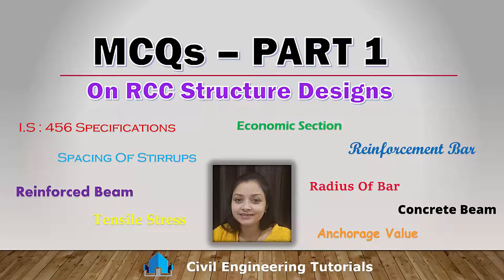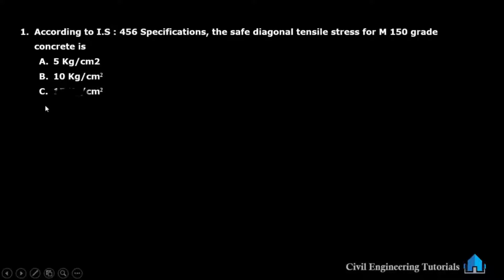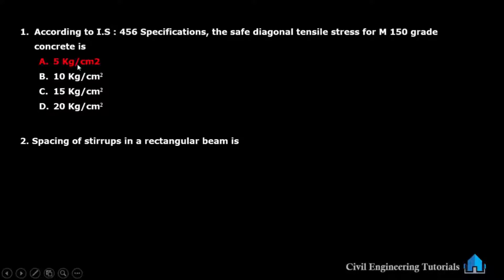Let's get started. Our first question: according to IS 456 specifications, the safe diagonal tensile stress for M150 grade concrete is — option A: 5 kg/cm², option B: 10 kg/cm², option C: 15 kg/cm², option D: 20 kg/cm². The answer is 5 kg/cm². The safe diagonal tensile stress for M150 grade concrete according to IS 456 is 5 kg/cm².